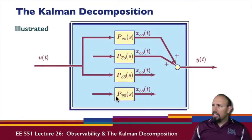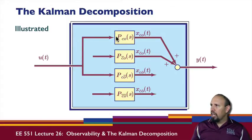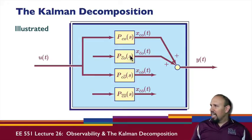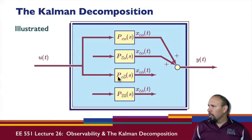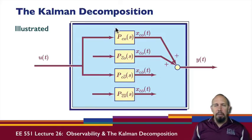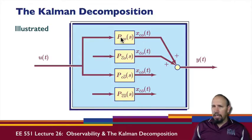We can illustrate this by decomposing the system into its different parts. The controllable and observable part receives the control signal and its output is seen in the overall output. The part that is not controllable doesn't receive the input, but its output goes to the overall output. The controllable but not observable part receives the input but its output doesn't reach the overall output. The neither controllable nor observable part has neither property. A system can have all four of these parts, or it might not have some — for example, it might be completely controllable and observable.